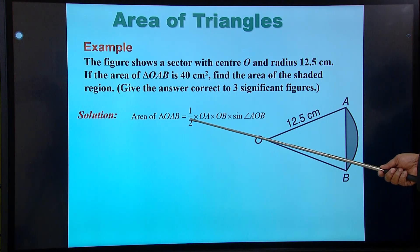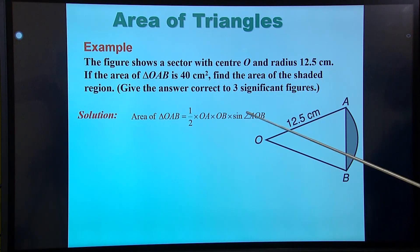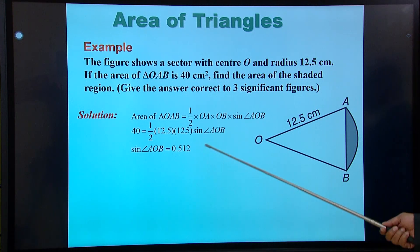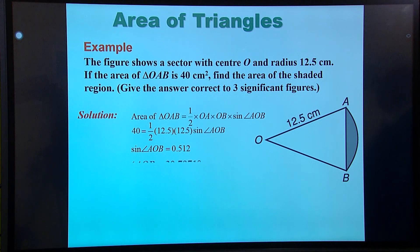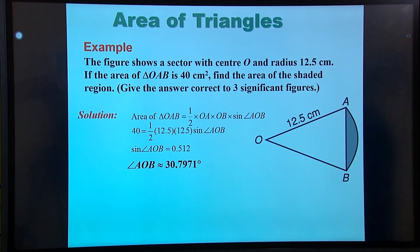And I can do that using the area for the triangle, half AB sine C. And if I solve that, you will see sine of AOB is 0.512, which means the angle is 30 degrees.